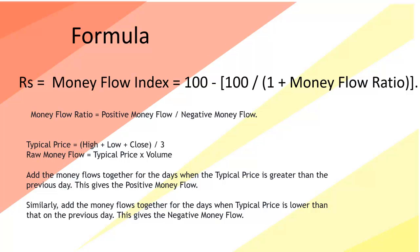Before we proceed, we will look at the formula for the Money Flow Index. The Money Flow Index is equal to 100 minus 100 divided by 1 plus the money flow ratio. For calculating money flow, first we need to calculate the typical price, which is high plus low plus close divided by 3. Once we have the typical price, we multiply it with the volume to get a raw money flow.